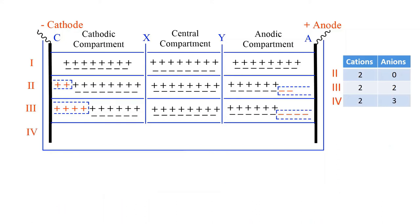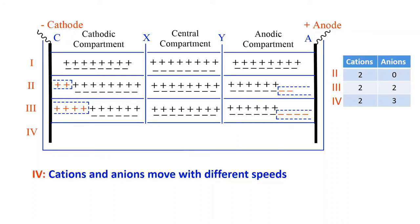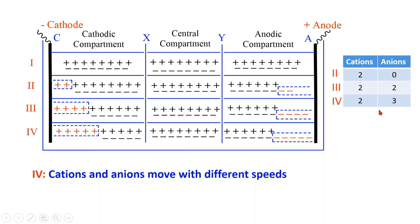In case four, when cations and anions have different speeds, let us consider two cations and three anions move when the potential gradient is applied in a given time interval. Two cations from the anodic compartment through the central compartment move to the cathodic compartment, whereas three anions from the cathodic compartment through the central compartment move to the anodic compartment. We can see that five cations and five anions are discharged at the respective electrodes.